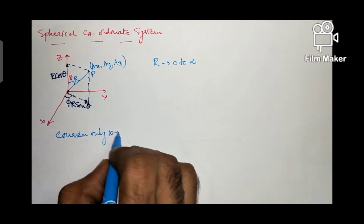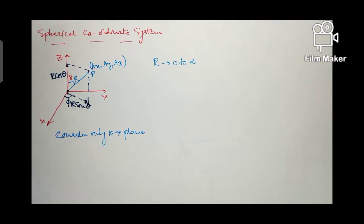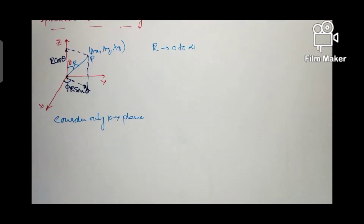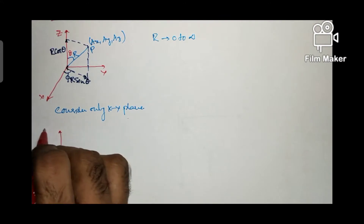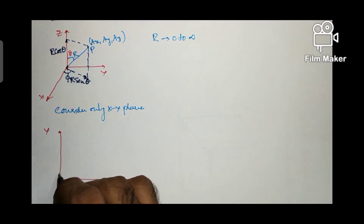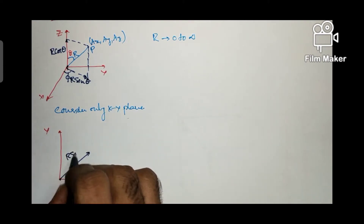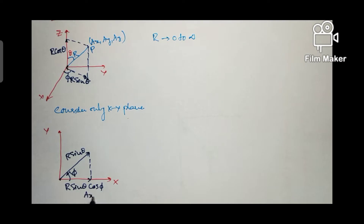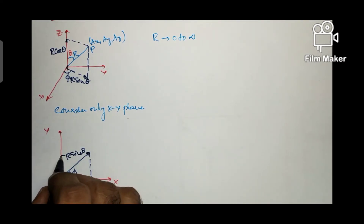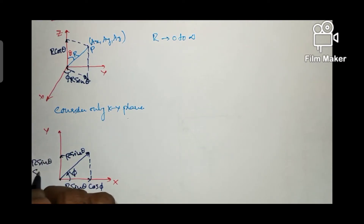Phi will have the same range as in cylindrical coordinates, that is from 0 to 2 pi. Now I am considering the xy plane alone, drawing the x axis and y axis. The radial component in the xy plane is R sin theta. Phi is measured from the x axis to R sin theta. When I divide R sin theta into two components: along x axis it will be R sin theta cos phi, and along y axis it will be R sin theta sin phi, known as Ay and Ax respectively.